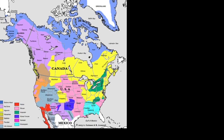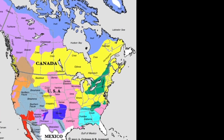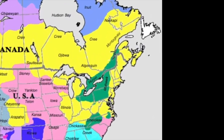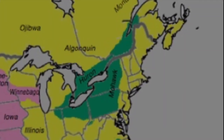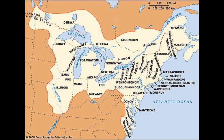We will focus on the Iroquoian languages, whose speakers occupy mainly the Great Lake area. The Iroquoian language family contains different languages, and this tree diagram represents its internal structure. Today's subject, Mohawk, belongs to the Six Nations subdivision.